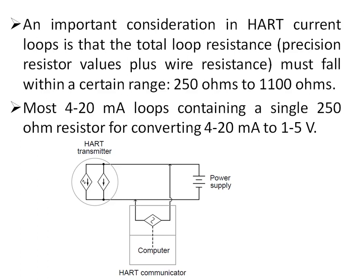One important consideration for HART is that the total loop resistance must be in the range of 250 ohms to 1100 ohms. This 250 ohm minimum is easily met by placing the precision resistor used for converting 4 to 20 milliampere to 1 to 5 volts. In the next video, I will discuss HART communication basics further and why this 250 to 1100 ohm limitation is required. This is the HART transmitter block diagram, which can also be connected to a HART communicator for troubleshooting or calibration purposes. Thank you for watching.